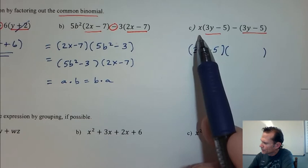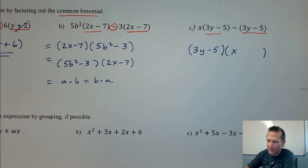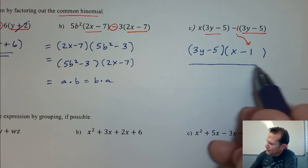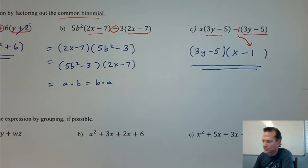And then make a parenthesis for my leftovers. Leftover is x, and then you have to be a little bit careful here, remembering that there's a negative 1 here. So what goes in this parenthesis here? A minus 1. And that's factoring out the common binomial.